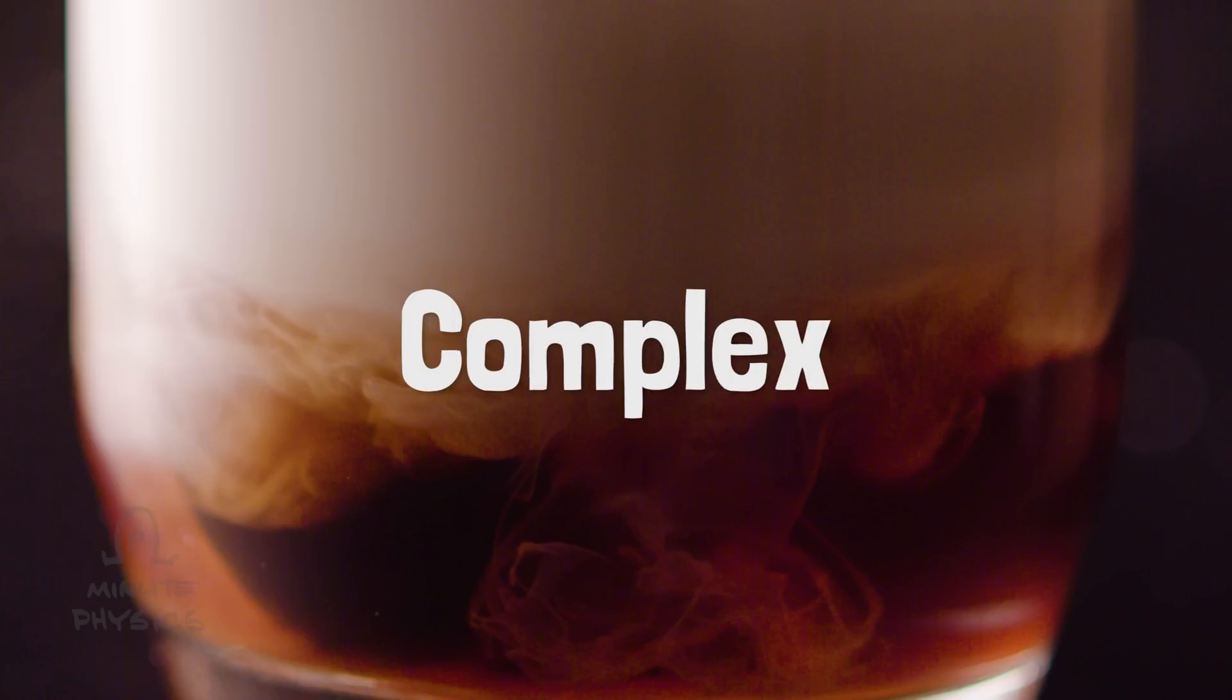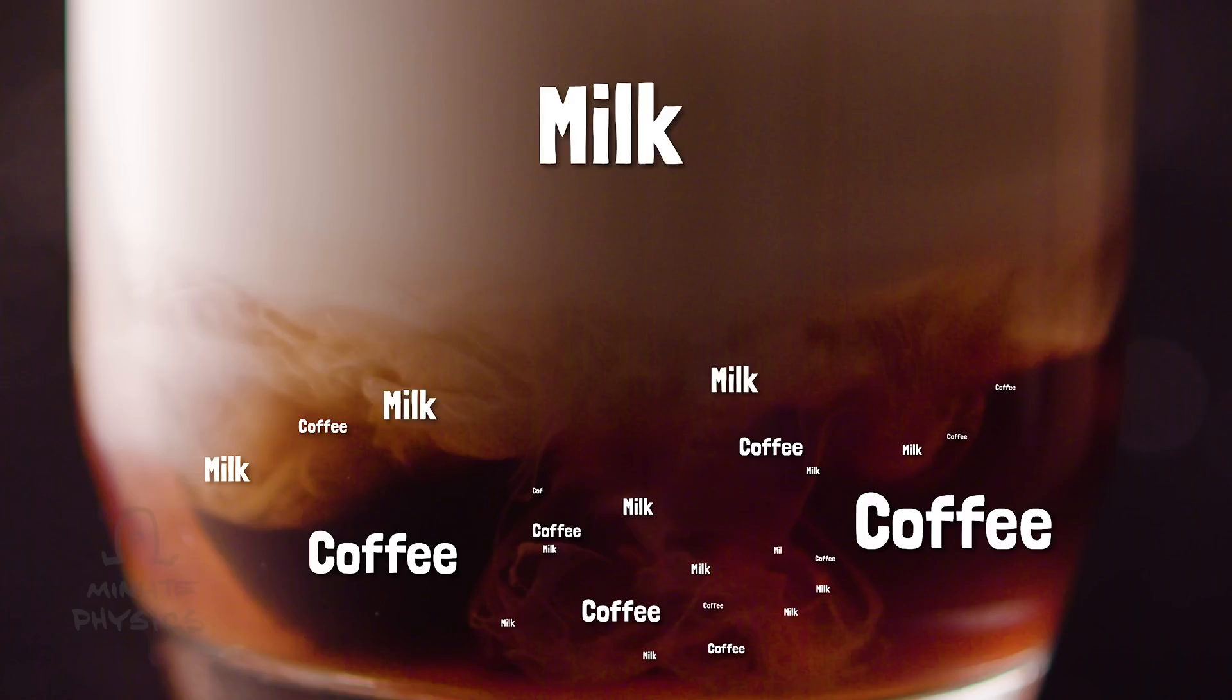Now as the milk and coffee begin to mix, entropy goes up. Where they are mixed together, swapping some coffee molecules for milk molecules no longer makes much of a difference. But the system also becomes more complex. To describe what you see, you would have to specify exactly how all of those tendrils of milk and coffee intricately swirl into each other.